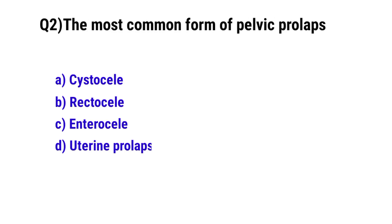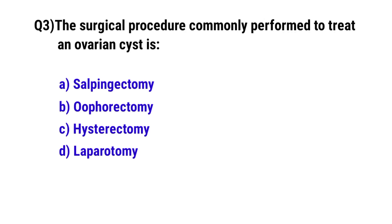Question number two: The most common form of pelvic prolapse. The correct option is cystocele.